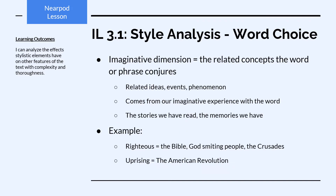Lastly, the imaginative dimension is all the related concepts that the word or phrase conjures — everything besides the physical sensations and the emotions. It's all the other images, ideas, events, and phenomena that come to mind, and it comes from our imaginative experience with the word. The imaginative meanings of 'righteous' bring to mind the Bible, God smiting people, the Crusades — things from literature and history associated with that word. When I think of 'uprising,' I think of revolutions throughout history, but as an American, the first one that comes to mind is the American Revolution, which, again, John Muir was counting on.